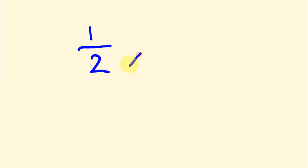The type of thing you'll be multiplying when you multiply fractions looks like this. The most simple example would be a half times three quarters. Now what this actually means is a half of three quarters, so we're going to get a smaller answer. You might be able to think of what half of three quarters is, but I'm going to show you how to do this mathematically.